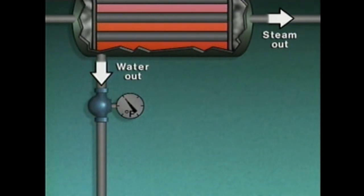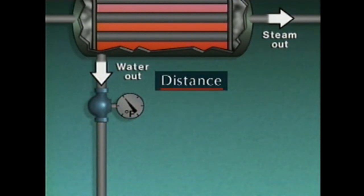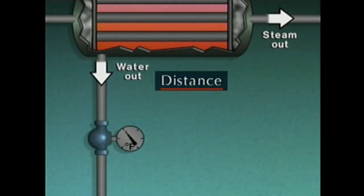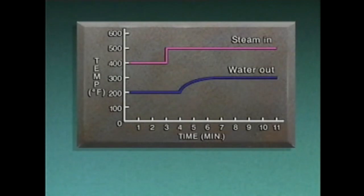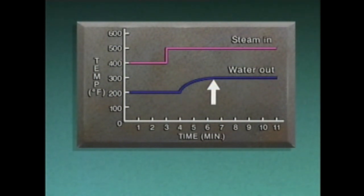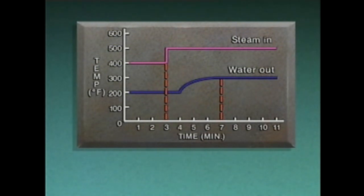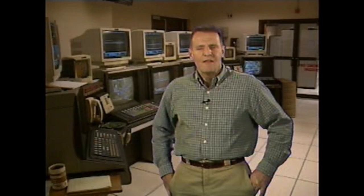Another factor that can contribute to dead time is the distance that heat must travel to reach the temperature gauge — the greater the distance, the greater the dead time. After the time delay, the water temperature gradually rose to a new value of 300 degrees. The total amount of time from when the steam temperature changed until the water temperature reached its maximum amount of change is called lag time, or lag. Lag is caused by the combined effects of dead time and other process characteristics such as resistance and capacitance.